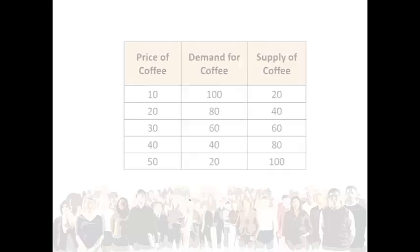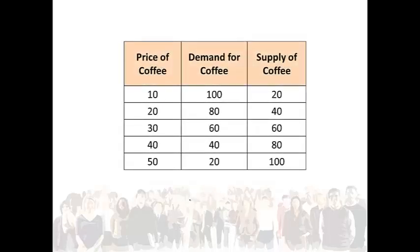Let's consider our market for coffee. The demand and supply of coffee is represented in this table. Equilibrium occurs when the quantity of coffee demanded and the quantity of coffee supplied are equal. Hence the equilibrium price of coffee is 30 rand, as the quantity demanded is 60 and the quantity supplied is also 60.